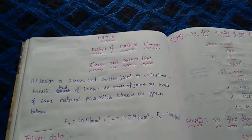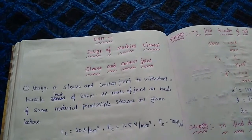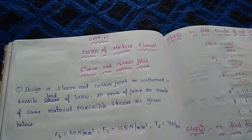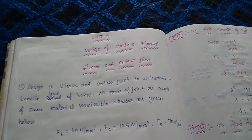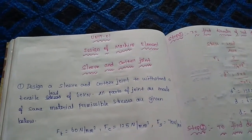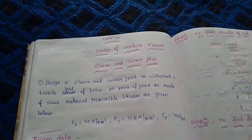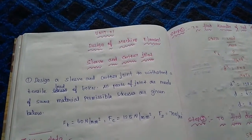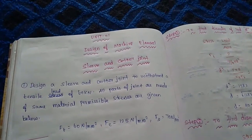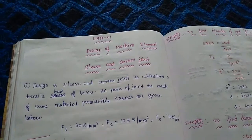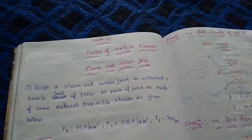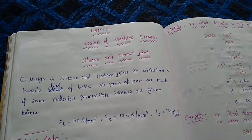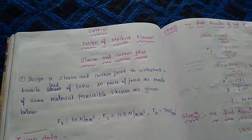Hello friends. I am going to show you a video about the design of the machine element unit 1 — sleeve and cotter joint. I am going to use the design of the 1st unit, as well as units 2, 3, 4, and 5. My reason is the sleeve and cotter joint.